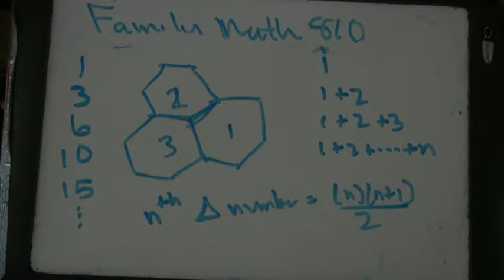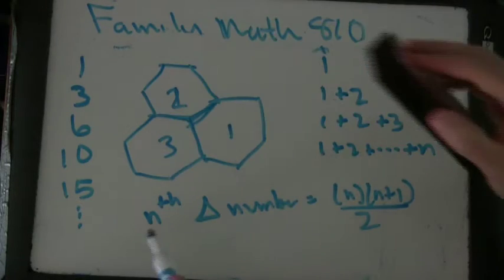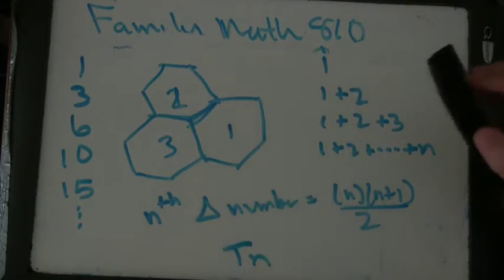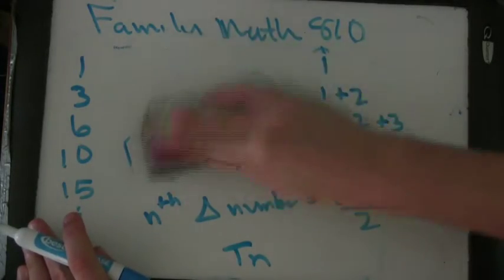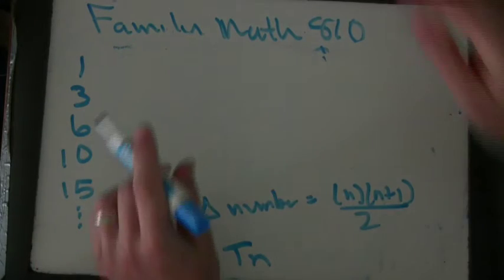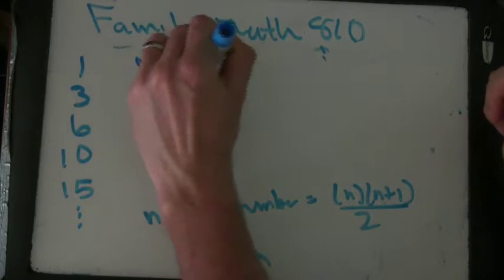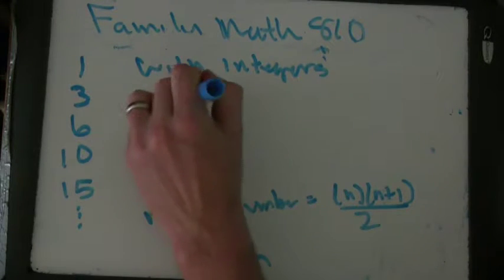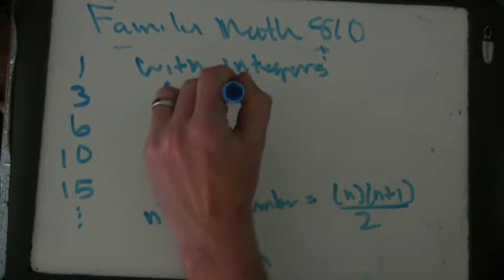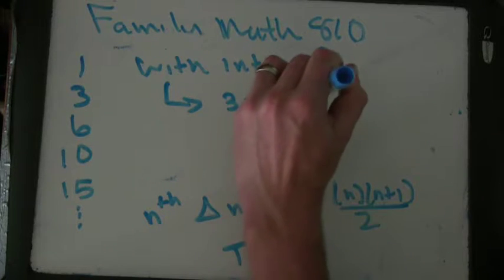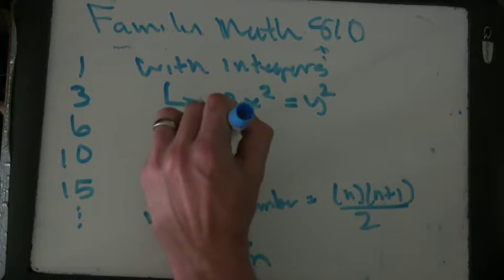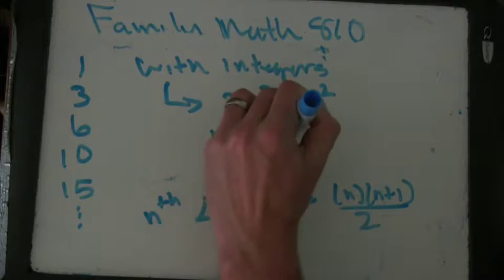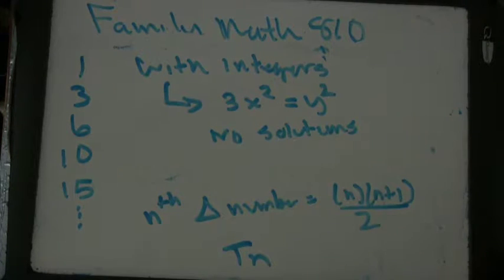Okay, and the interesting thing he was showing here is that there are solutions if I call this t_n. So previously with integers, three x squared equals y squared, no solutions.